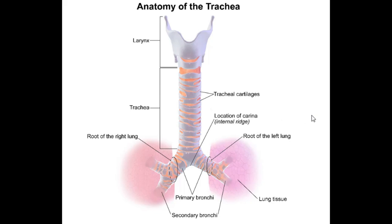Hey guys, welcome back to the DNN Medical Series. Today we'll be doing a short tutorial on the anatomy of the trachea. We're basically going to talk about the trachea, the bronchi, and the bronchioles. These all form the tracheobronchial tree, which is a system that allows air to pass through your lungs and where gas exchange occurs. The trachea is located in your neck down through your thorax.